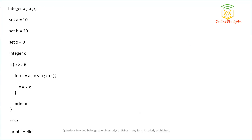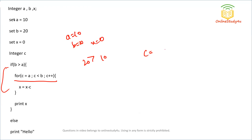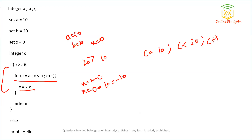Moving to the next question: we have integers a, b, and x with a set to 10, b set to 20, and x set to 0. We check if b is greater than a — 20 is greater than 10, so the condition is true. Inside we have a for loop where c is initialized to 10, running while c is less than b (which is 20), incrementing c each time. We update x as x minus c. First iteration: x equals 0 minus 10, giving minus 10. Then c becomes 11, giving x equals minus 10 minus 11 equals minus 21.